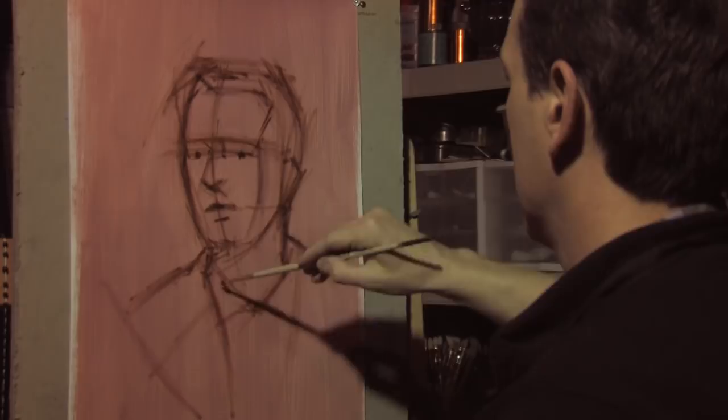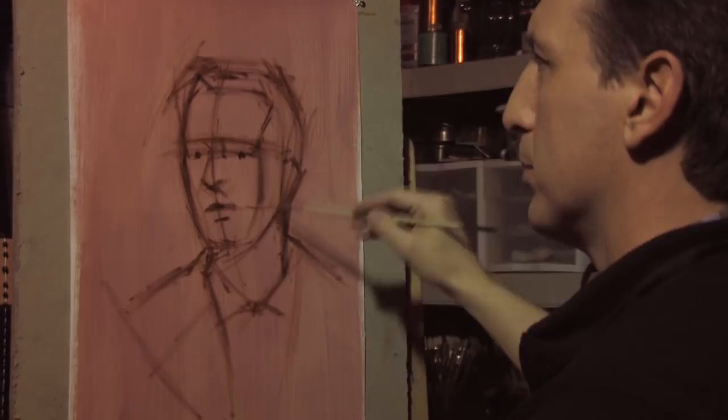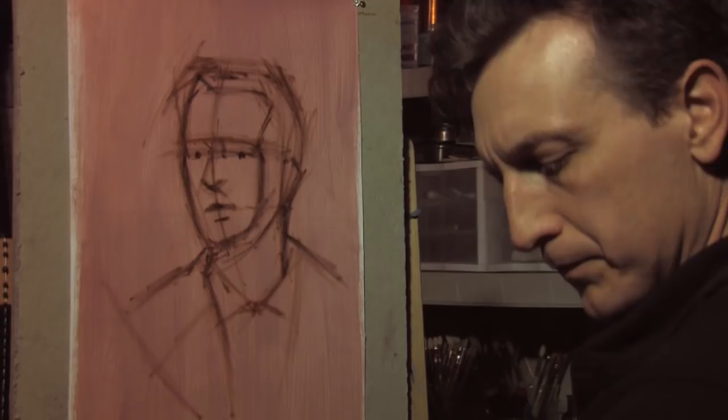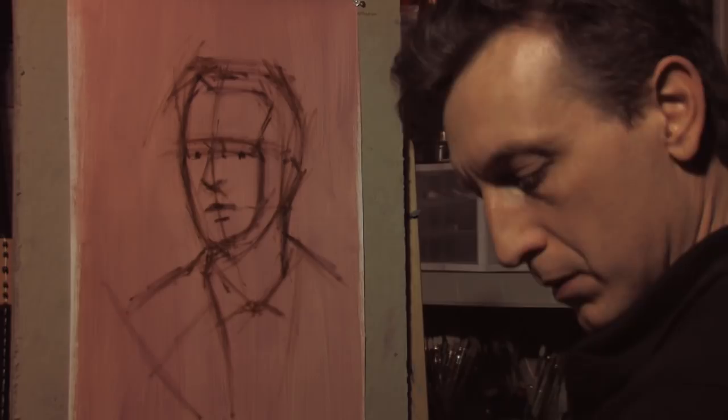And start to at least quickly get the side plane of the face laid in. The shadow boundary comes down, cuts across the jaw, under the chin, under plane, and down the neck.